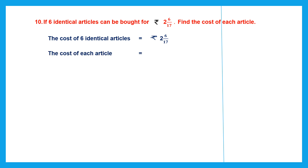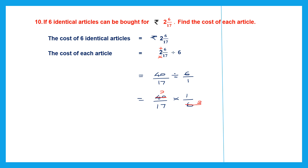To find the cost of each article we have to divide 2 and 6 by 17 by 6. The first step is conversion: convert 2 and 6 by 17 into an improper fraction. 17 into 2 is 34, and 34 plus 6 is 40. So we get 40 by 17 divided by 6 by 1. The first rational number remains the same — 40 by 17. Division changes to multiplication, 6 by 1 becomes 1 by 6. We can cancel 6 and 40 — both are even numbers, divisible by 2: 2 threes are 6, 2 into 20 is 40. Multiply the numerators: 20 into 1 is 20, and the denominators 17 into 3 is 51.